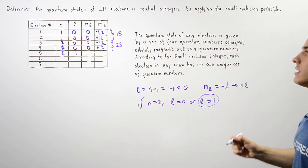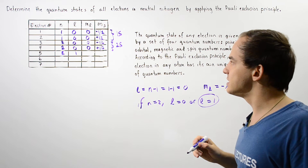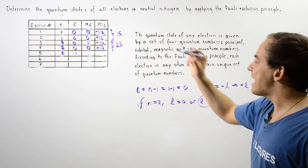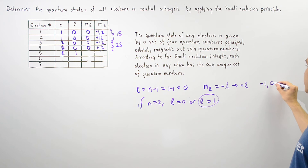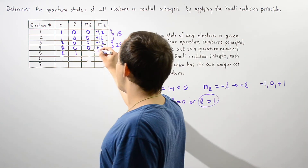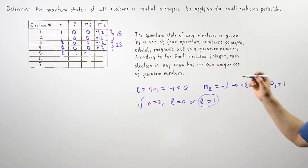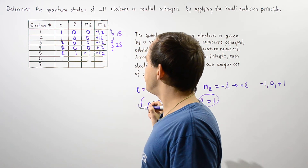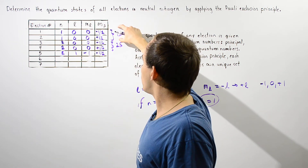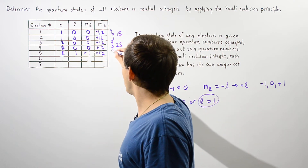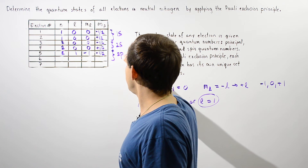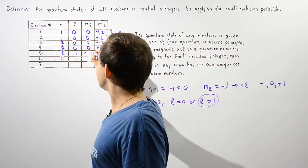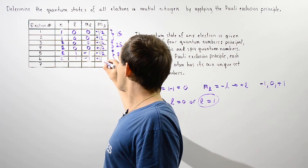What is the magnetic quantum number? Because L equals 1, ML can be negative 1, 0, or positive 1. We begin with ML equals negative 1. For the spin quantum number, we choose negative one-half first. Two electrons can fit into this orbital, the 2px. So for electron six, n is still 2, L is still 1, ML is still negative 1, but MS changes to positive one-half.